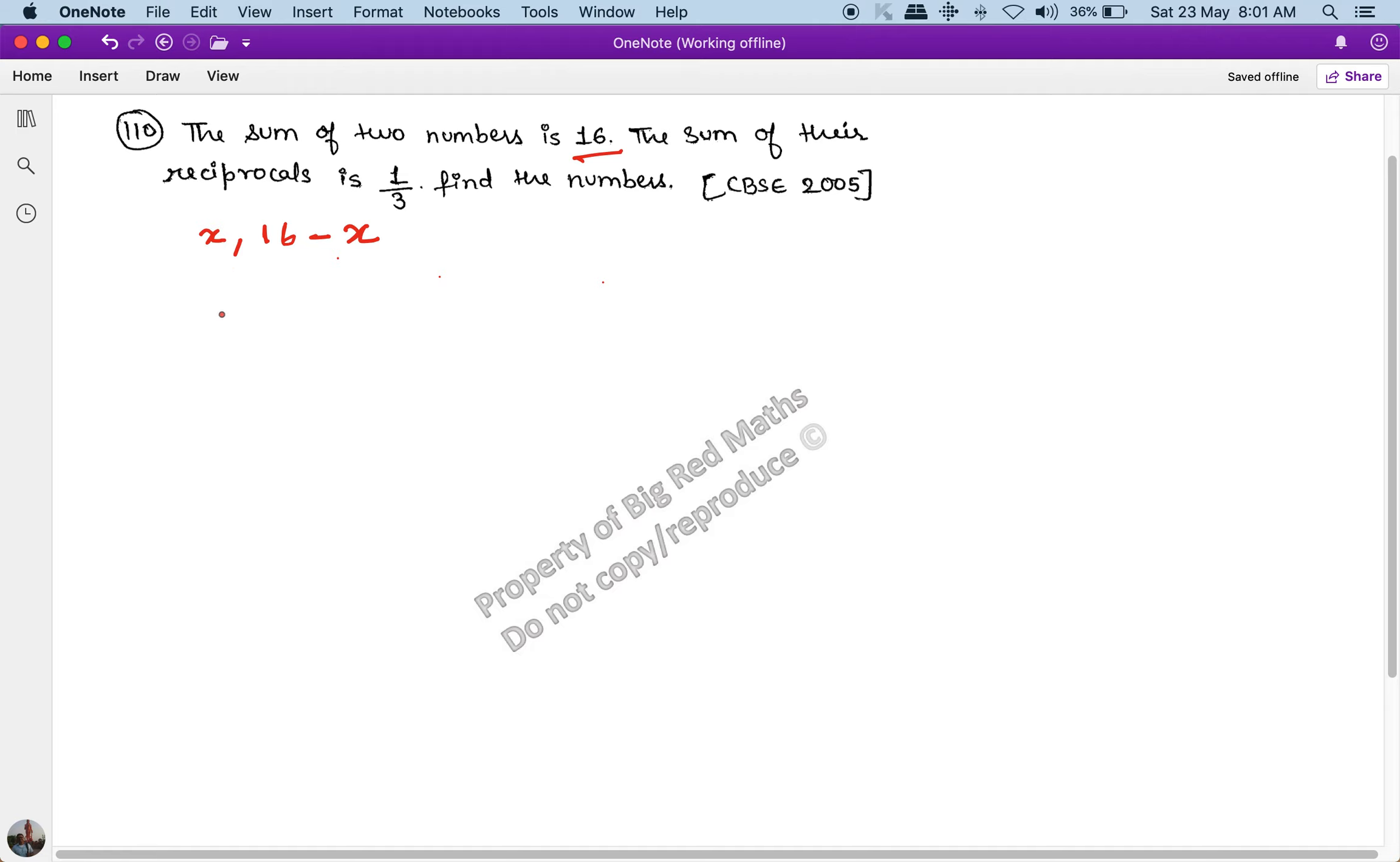The sum of the reciprocals is 1 by 3. This means that 1 upon x plus 1 upon 16 minus x is equal to 1 upon 3. This is our quadratic equation which we have to solve. We have to find the numbers. This is a very easy question if you understand these two conditions.